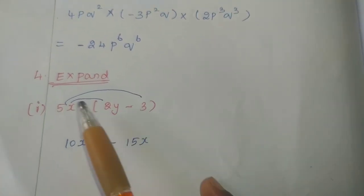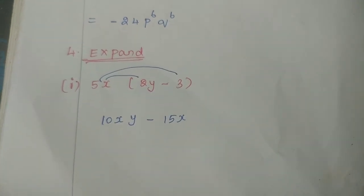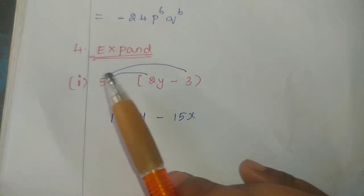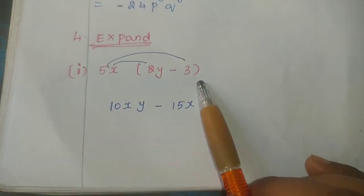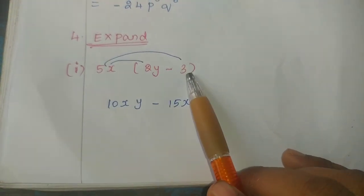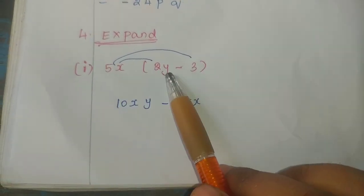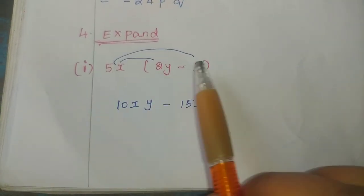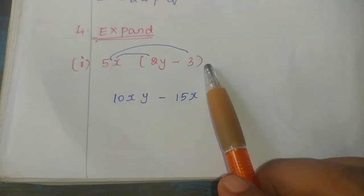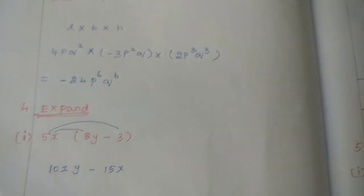4th problem: Expand 5x(2x minus 3). Expand means we do the product. Multiply 5x into 2x: 5 times 2 is 10, x into x is x square. Plus into minus gives minus. Then 5 times 3 is 15, times x gives 15x. So the answer is 10x square minus 15x.